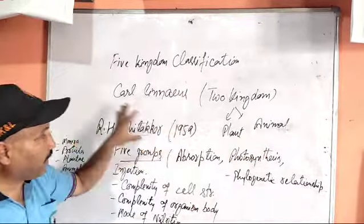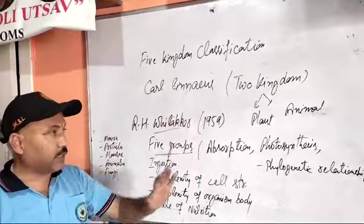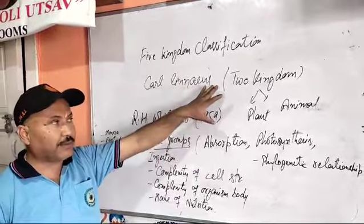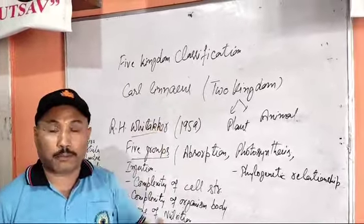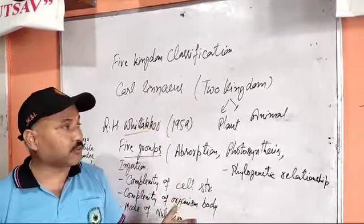Whittaker introduced the five-kingdom classification concept, meaning living organisms are divided into five kingdoms.